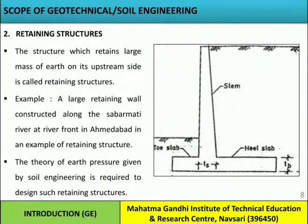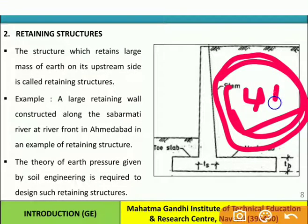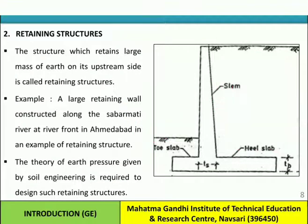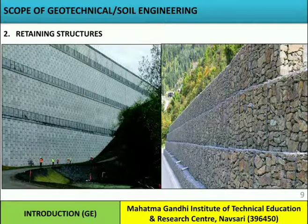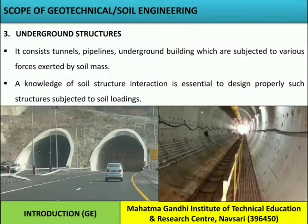Retaining structures: a structure which retains a large mass of earth on its upstream side is called a retaining structure or retaining wall. There are two kinds — dams, which retain water on the upstream side, and retaining walls, which retain soil on the upstream side. A large retaining wall constructed along the Sabarmati River at the riverfront in Ahmedabad is an example. The theory of earth pressure from soil engineering is required to design such structures.